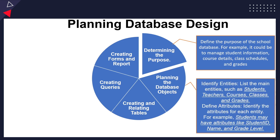Once you have the purpose, the next step is to plan database objects by identifying entities. In a school database, entities can be students, teachers, courses, classes, and grades. From the entities you go further to define the attributes — what do you want to store about students? Maybe the student ID, the student's name, and the grade level. You logically analyze the purpose to identify entities, then further analyze those entities to determine the specific attributes or information to be stored.